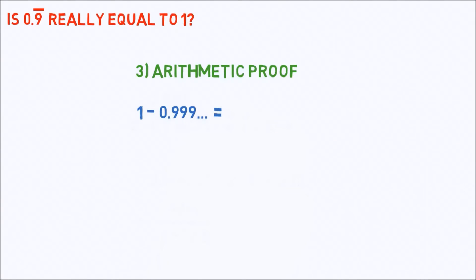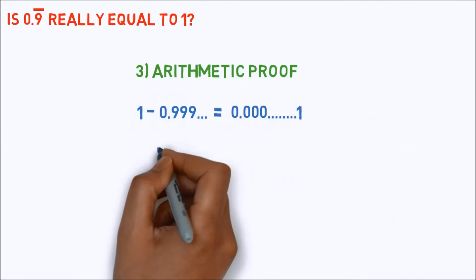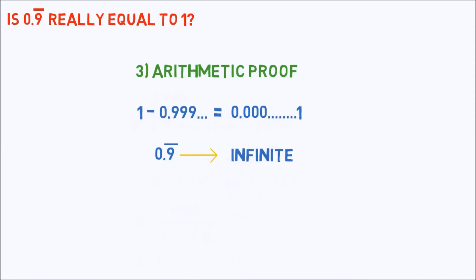You will get an infinite string of zeros. What about that one at the end? 0.9 bar is an infinite decimal. There is no end, and thus, there is no 1 at the end. The zeros go on forever.